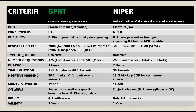Registration fee for GPAT: for General and OBC category, 2000 rupees; for SC, ST and other categories, 1000 rupees. For NIPER: 3000 rupees for General and OBC category, and 1500 rupees for SC and ST category. Both GPAT and NIPER questions are objective type.